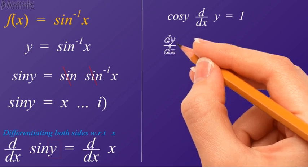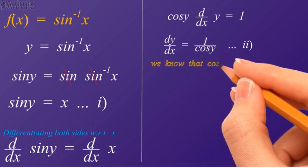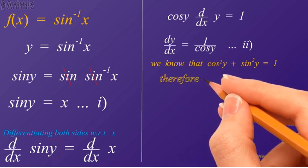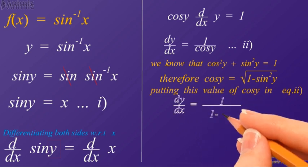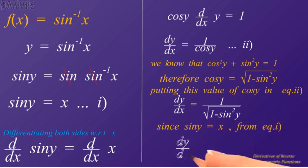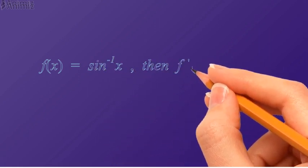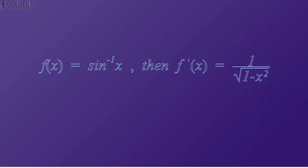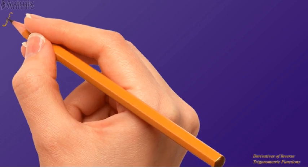Now dividing both sides by cosine y — or we can say that as cosine y is in multiplication on the left-hand side, it will be in division on the right-hand side. We know from trigonometric identities that cosine squared plus sine squared is equal to 1. From this identity, cosine y is equal to the square root of 1 minus sine squared y. Putting this value in equation 2, and from equation 1 we know that sine y is equal to x, therefore replacing sine squared y by x squared. Hence we got the derivative of sine inverse x, which is 1 divided by the square root of 1 minus x squared. When f(x) is equal to sine inverse x, then its derivative f′(x) will be equal to 1 divided by the square root of 1 minus x squared.